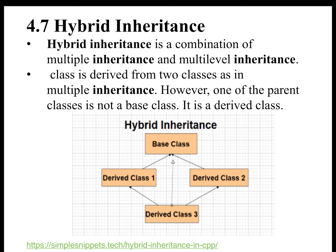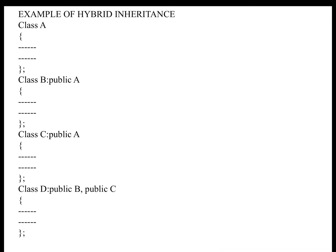There are two derived classes, Derived Class 1 and Derived Class 2, having one base class. Derived Class 3 has a combination of Derived Class 1 and Derived Class 2 through inheritance. So Hybrid Inheritance is a combination of Multiple Inheritance and Multi-Level Inheritance.